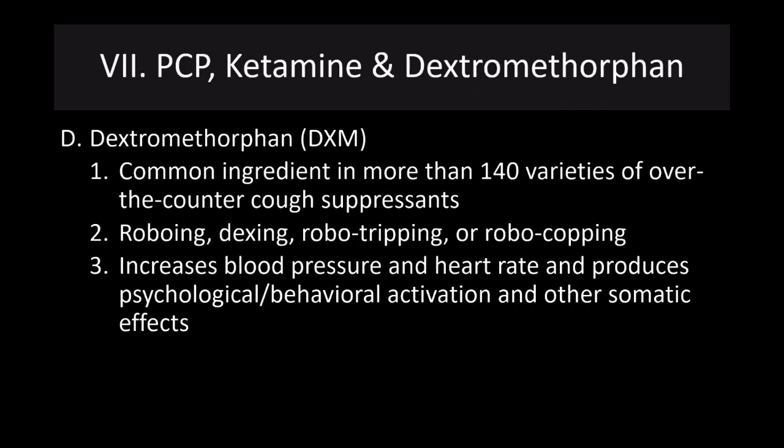Dextromethorphan is a common ingredient in over-the-counter cough suppressants. People will ingest very high amounts of these drugs — called robo-tripping, dexing, or roboing. This can increase blood pressure and heart rate and produces psychological and behavioral activation with similar effects to other hallucinogens. It can be particularly dangerous, often in combination with other drugs taken alongside the dextromethorphan for this psychological effect.